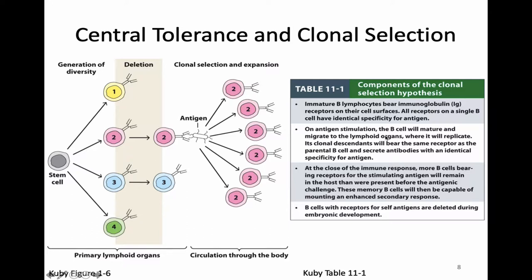When we think about clonal selection, all of our immature B cells have B-cell receptors on their surfaces, and all of the receptors on a single B cell have identical specificity for antigen. On antigen stimulation, the B cell will mature and migrate to lymphoid organs where it will replicate. Its descendants will bear the same receptor as the parental B cell and secrete antibodies with identical specificity. B cells bearing receptors for self-antigens are going to be deleted during embryonic development — this process is called central tolerance.